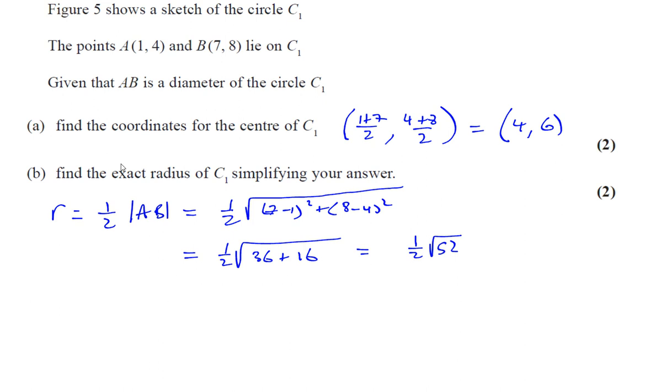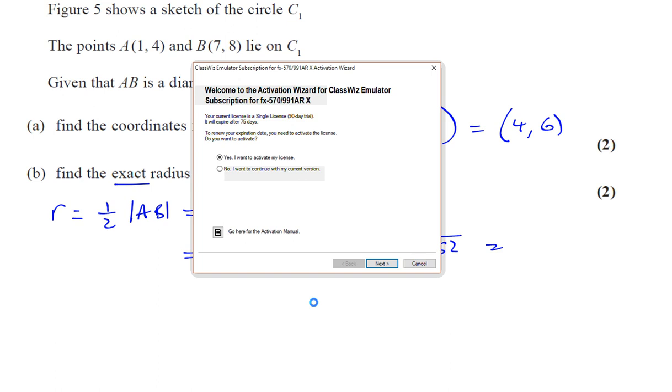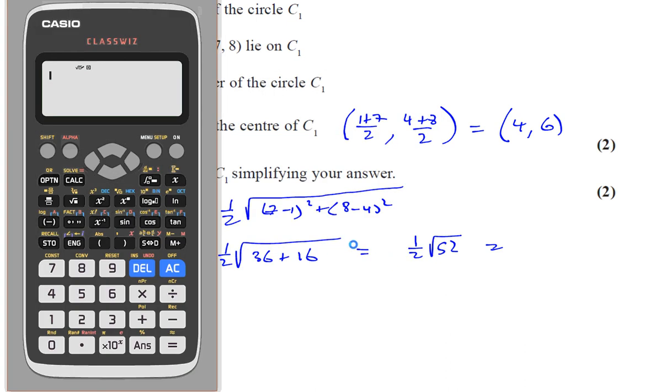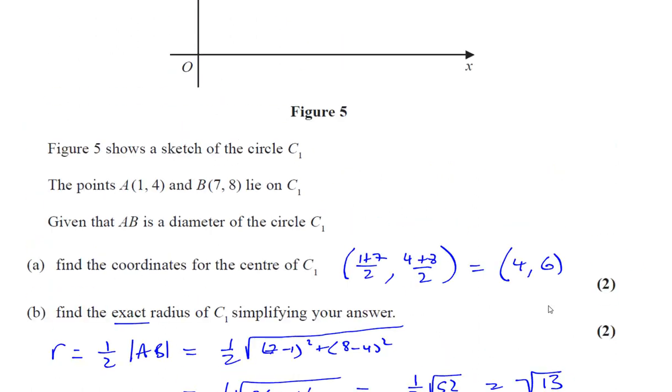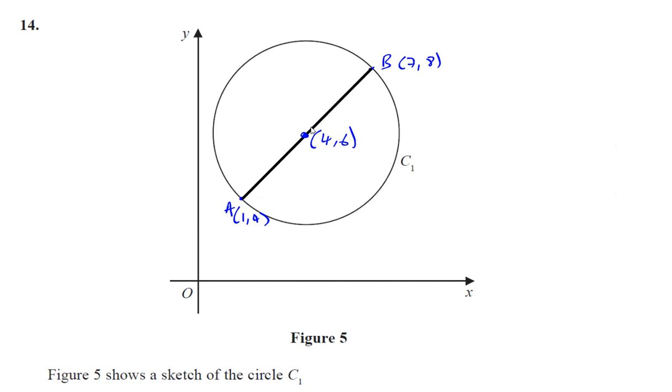It says find the exact radius of C1 simplifying your answer. So of course you're going to have a surd in your answer. We could just confirm that we've got the right answer. The simplified surd is going to be a half times the square root of 52, which gives us the square root of 13. Because you've got 4 times 13 is 52, right? So that's a perfect square. So a half times root 4, which is 2, times root 13. So that's the radius of this circle, half of the diameter.